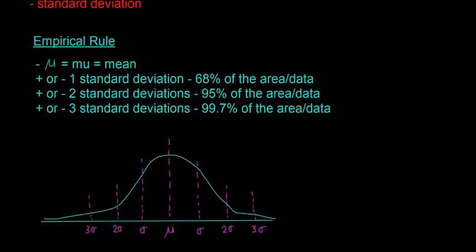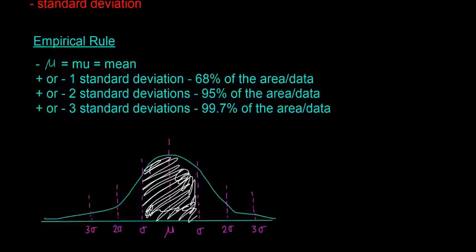So the empirical rule states that plus or minus one standard deviation from the mean—so that's kind of this area you can see here. So on a normal distribution curve or a bell curve, the standard deviation is always well defined. So say it's plus 10 or minus 10, depending on what the value is, if it's centimeters.